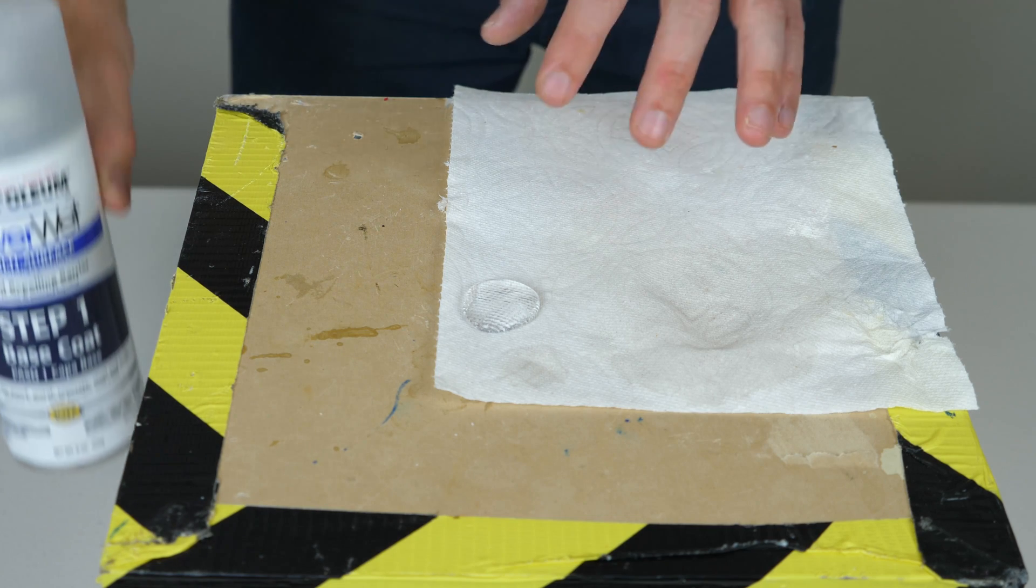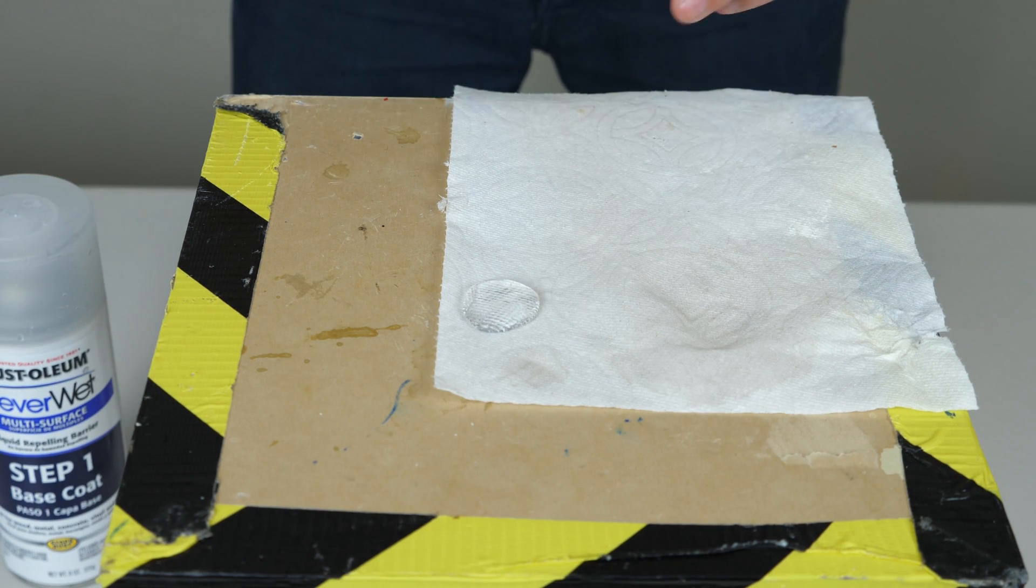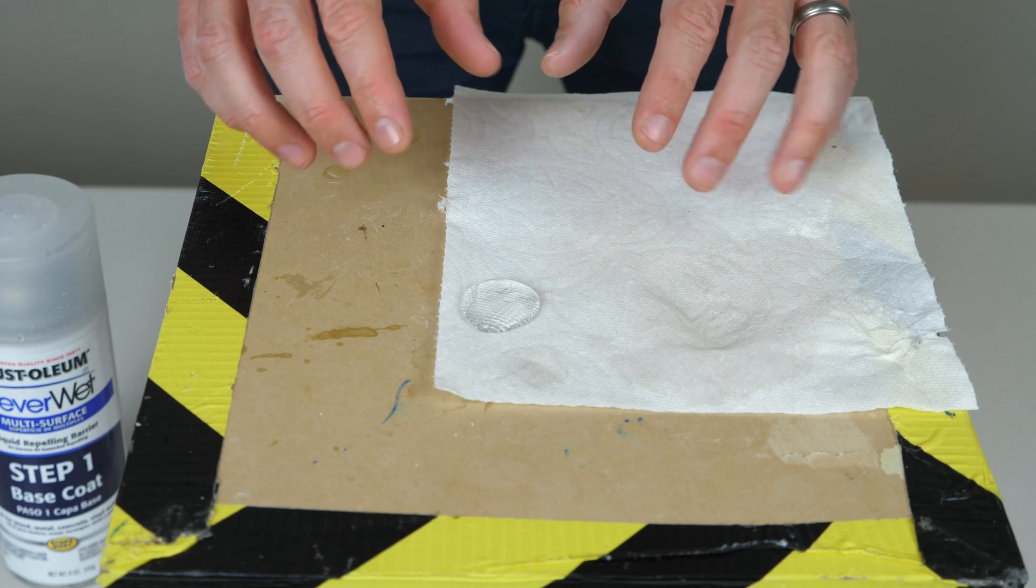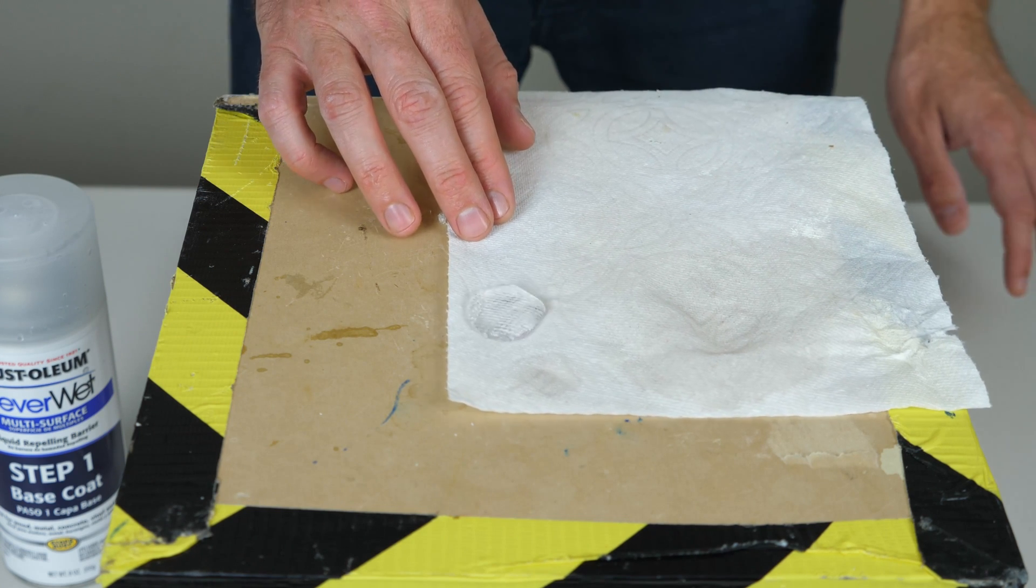So NeverWet has hydrophobic molecules that coat the surface, but it also makes tiny little bumps and ridges, and so it makes this super hydrophobic surface.